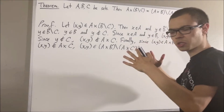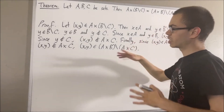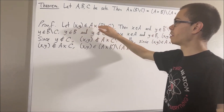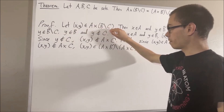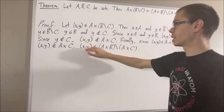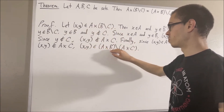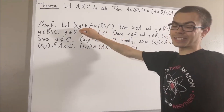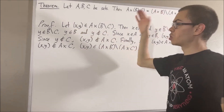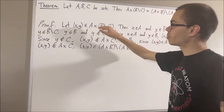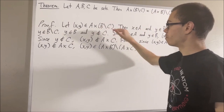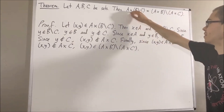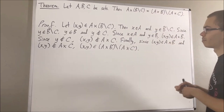Putting this together, we see that under the assumption that x comma y is an element of A times B set minus C, it follows that x comma y is an element of A times B set minus A times C. Since x comma y was arbitrary, this shows that every element of this set belongs to this set — in other words, we've shown that this set is a subset of this set.